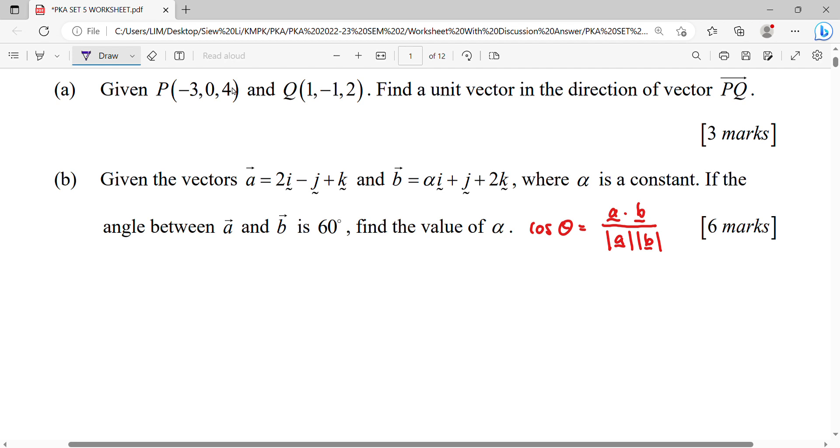Our first step is going to change coordinate into position vector. So coordinate P into position vector. What is position vector? Means it will be referring start from origin to that coordinate, so OP. Once you change into vector, it will be like negative 3, 0, 4. This is the way written in vector, or you can write negative 3i, 0j, and then 4k. Either one.